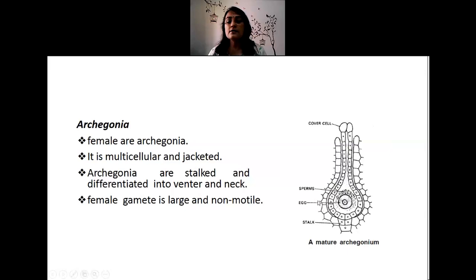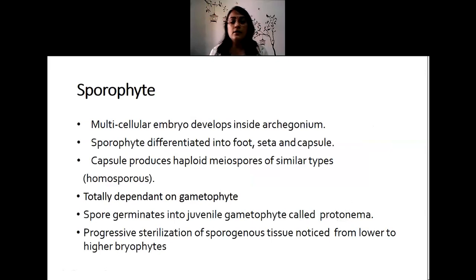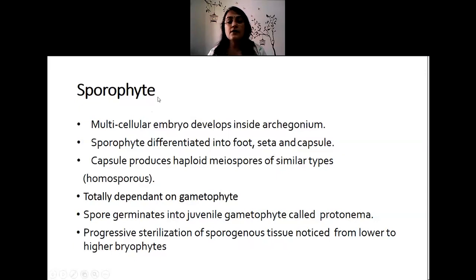The archegonium is a stalked structure differentiated into a venter — a rounded bulbous structure — and an elongated neck portion, with a stalk one to a few cells in thickness. Within the venter a female gamete or egg is produced, which is large and non-motile. The antherozoids come and fuse with the female gamete in the venter, resulting in the formation of a zygote, which gives rise to a sporophyte. The embryo develops inside the archegonium after fertilization.